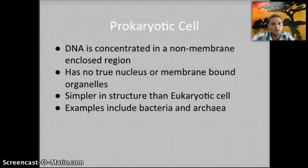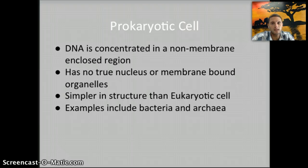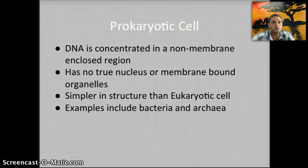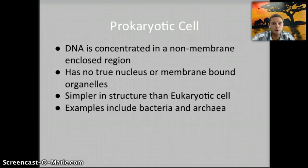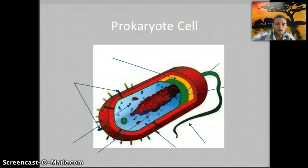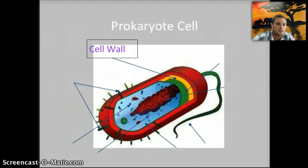Prokaryotes don't have compartments or a lot of organelles to be able to do things. Most likely they evolved before eukaryotes, and there's a lot of research and data that would support this, and we'll look at that a little bit later. They're usually quite small in size, about 1 to 3 microns, and they can be found pretty much everywhere — literally in almost every environment on the planet.